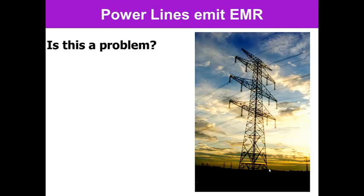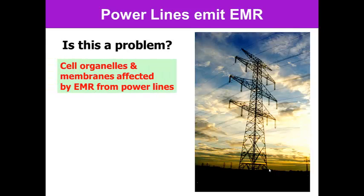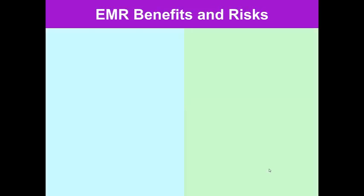Power lines also emit electromagnetic radiation. The question is, is this a problem? Because we've all heard of the news. Various communities don't want these high energy transmission lines passing through their communities. Cell organelles and membranes are affected by electromagnetic radiation from power lines.